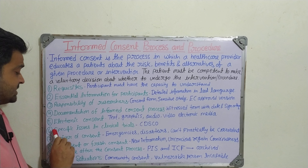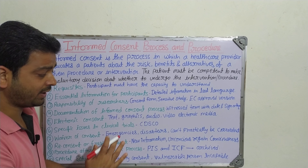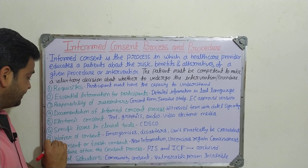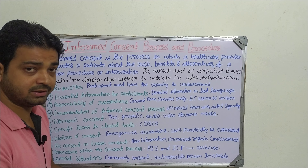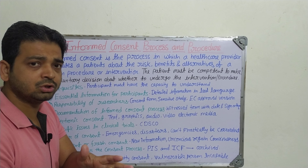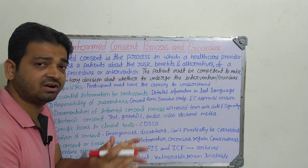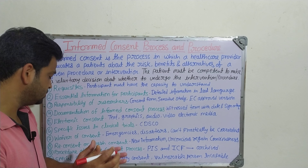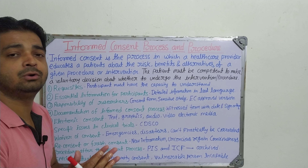The sixth one is specific issues in clinical trials. If any specific issue arises during the study, that is also covered. Then the seventh one is waiver of consent — like in an emergency situation, maybe in a COVID situation, where so many clinical trials were going on, not on COVID-19 but on cancer, HIV, and the like. In that situation, or during disasters like floods or earthquakes, the consent process can't practically be carried out, so some kind of fluctuation occurs in the clinical trial.